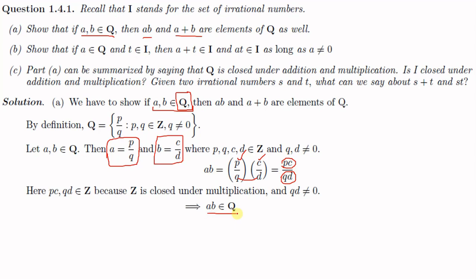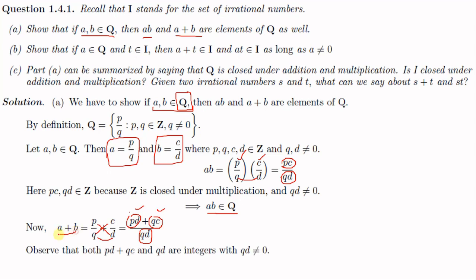Now we check for a plus b. We have a + b = p/q + c/d = (pd + qc)/qd. Since p, q, c, d are all integers, pd is an integer and qc is also an integer, so pd + qc is an integer. Since q ≠ 0 and d ≠ 0, qd ≠ 0. So this is an integer over a non-zero integer, meaning by the definition of Q, a plus b is an element of Q. We have shown that if a and b are any two rational numbers, then ab and a plus b are elements of Q.